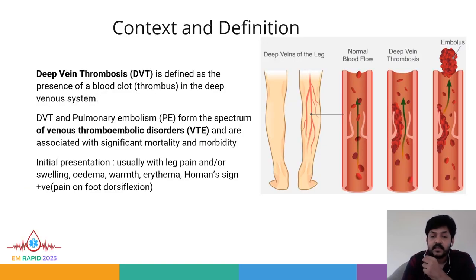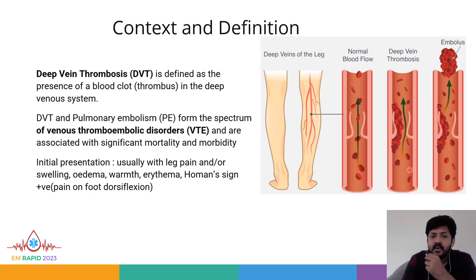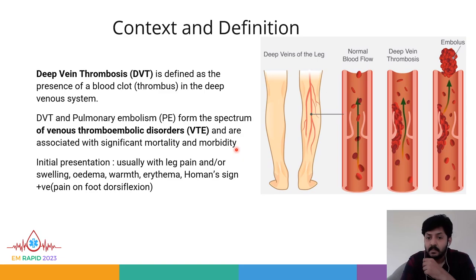What is Deep Vein Thrombosis? It is defined as the presence of a blood clot or thrombus in the deep venous system. Both Deep Vein Thrombosis as well as Pulmonary Embolism form the spectrum of venous thromboembolic disorders, and they are associated with significant mortality as well as morbidity.